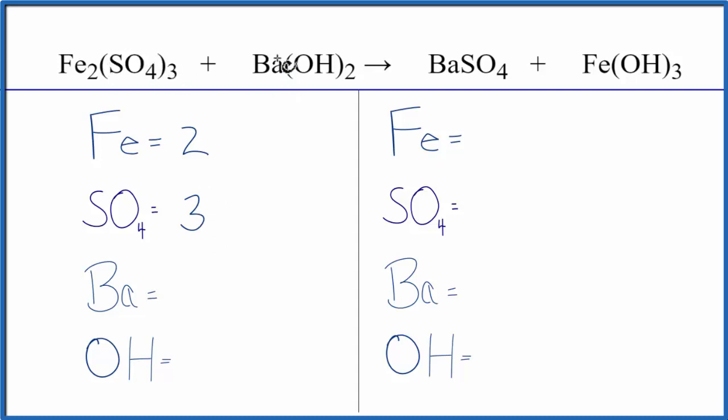So we have our three sulfates, we have our one barium. OH, that's the hydroxide, we have it here and here, so we have two times the one hydroxide, we have two hydroxides. On the product side we have one iron, one SO4 the sulfate ion, one barium, and three hydroxides.